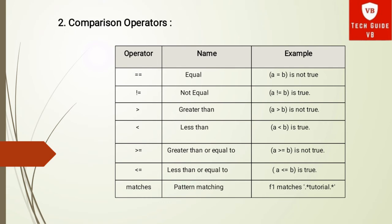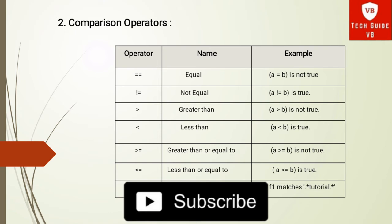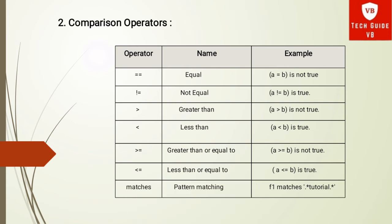The next comparison operator is less than, which checks if the left operand is less than the right operand. Suppose A = 10 and B = 20, then A < B gives true. Then greater than or equal to checks if the left operand is greater than or equal to the right operand — A = 10, B = 20, then A >= B is not true. Less than or equal to is the opposite of greater than or equal to. The final comparison operator is matches, also called pattern matching, which checks whether the string on the left-hand side matches with the constant on the right-hand side. For example: f1 matches 'tutorial', where f1 is a string and 'tutorial' is the constant.